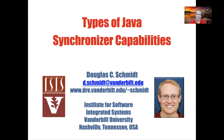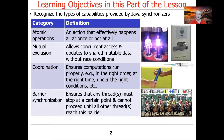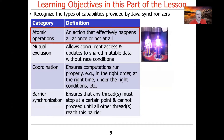Now that I've given you a basic overview of Java synchronization in general, it's time to start talking about the different types of Java synchronizer capabilities. We're going to group these into four main categories: atomic operations, mutual exclusion operations, coordination operations, and barrier synchronization. Each of these different categories will give us a way to solve different kinds of synchronization problems using Java mechanisms.